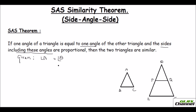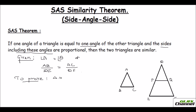The sides including these angles are AB and the corresponding side over there would be DE, so AB over DE is equal to AC over DF. This is what is given, and you need to prove that the two triangles are similar.